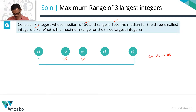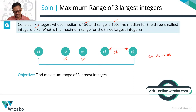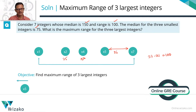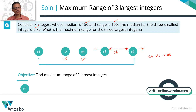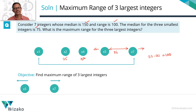Now let's understand what we need to find: the maximum range for the three largest integers — x5, x6, x7. We're trying to find how large the gap between x5 and x7 can be. To widen this gap, we push x5 as far left as possible and x7 as far right as possible. This essentially translates to: minimize x5 and maximize x7.